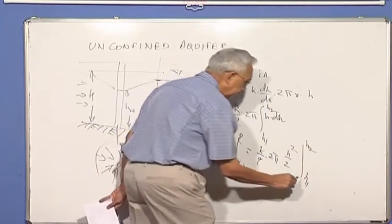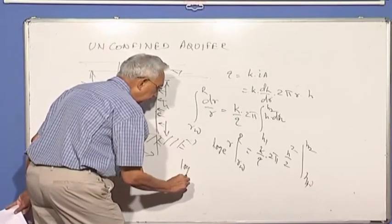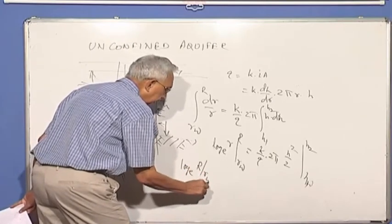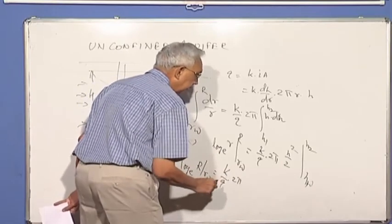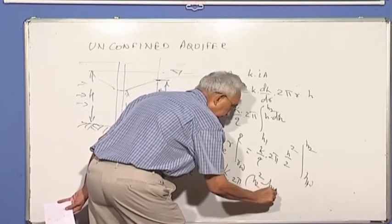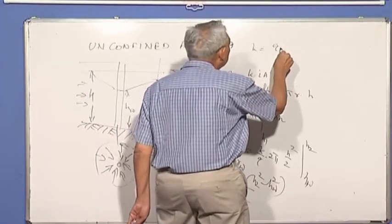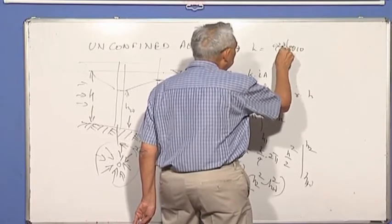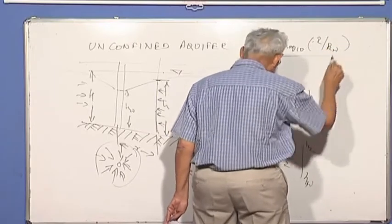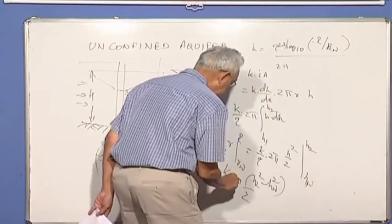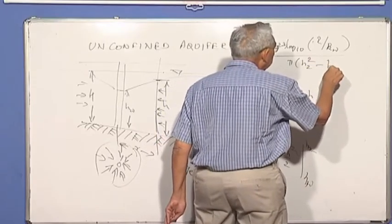What is H1, I can even say it's the height in the well HW, the height in the well. So now this can be written as log to the base E R by RW is equal to K by Q 2 pi, H2 square minus HW square by 2. And now you can find K is equal to Q log, I'll convert into 10, so I put 2.3, R by RW divided by 2 pi, oh this 2 and 2 cancel, so I simply will have pi into H2 square minus HW square.